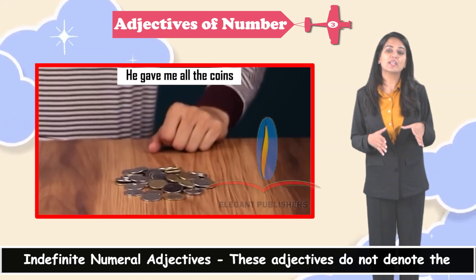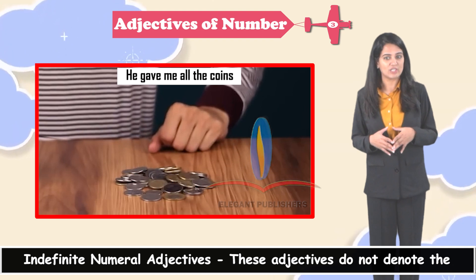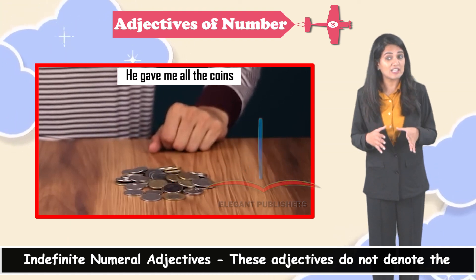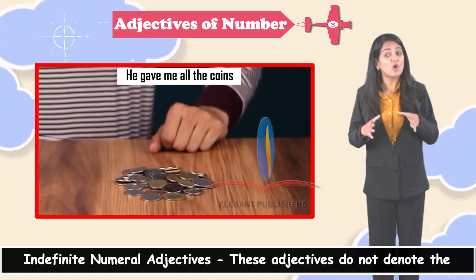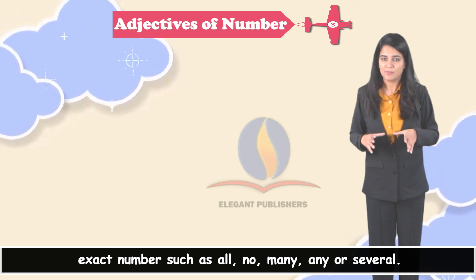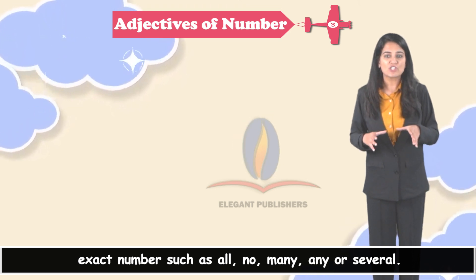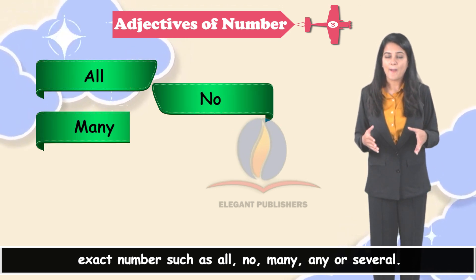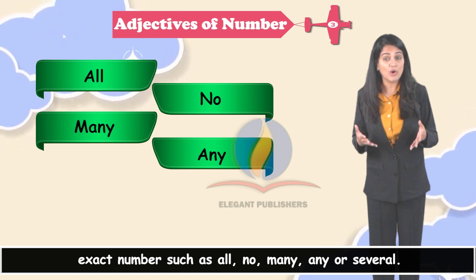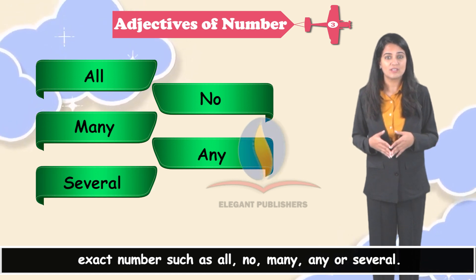Indefinite numeral adjectives — these adjectives do not denote the exact number, such as all, no, none, many, any, or several.